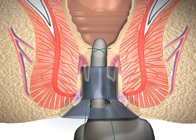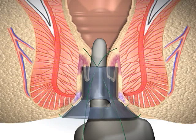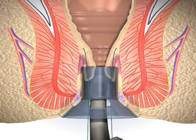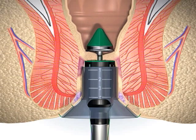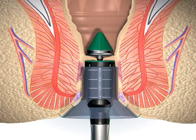The location of the purse string suture must ultimately result in a staple line that resides at least 2 centimeters above, so that the prolapsed mucosa begins to be drawn into the stapler casing.